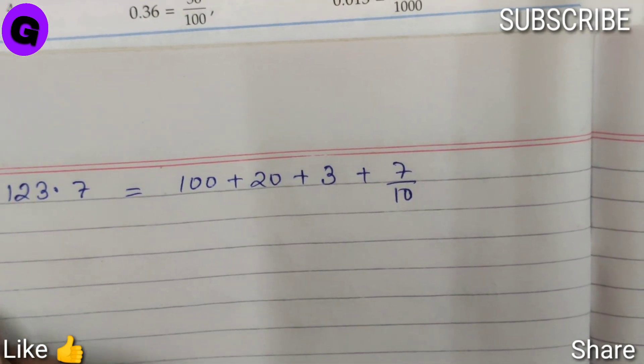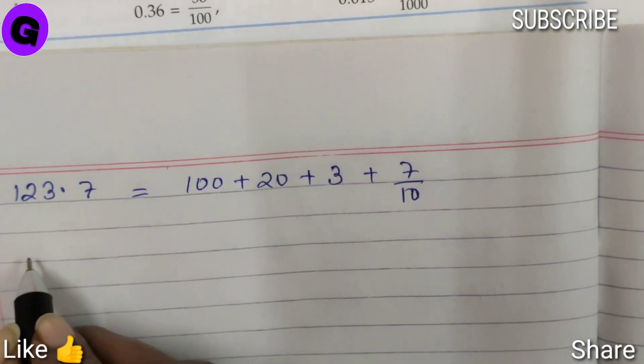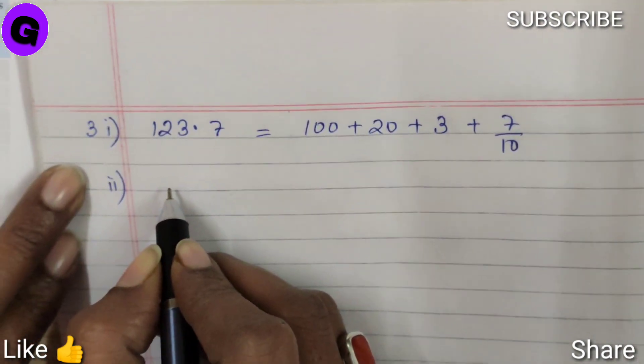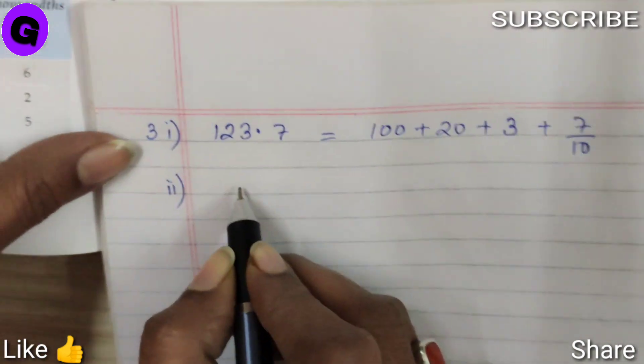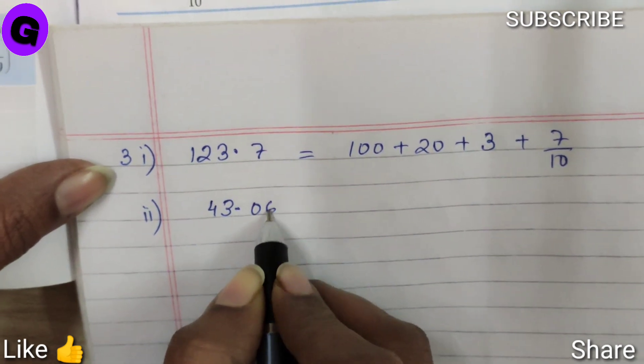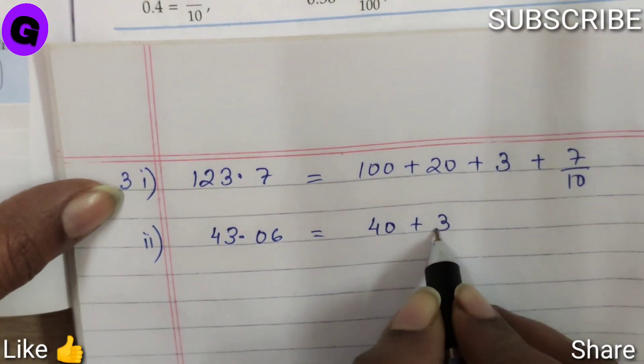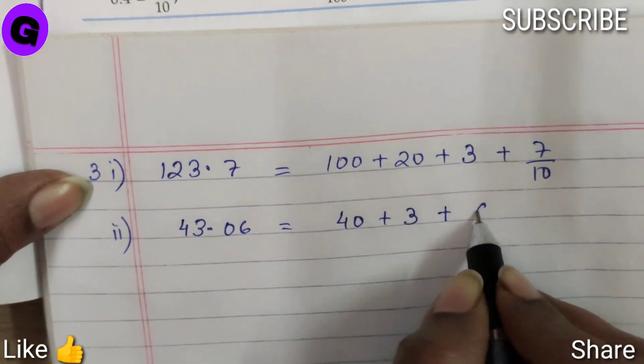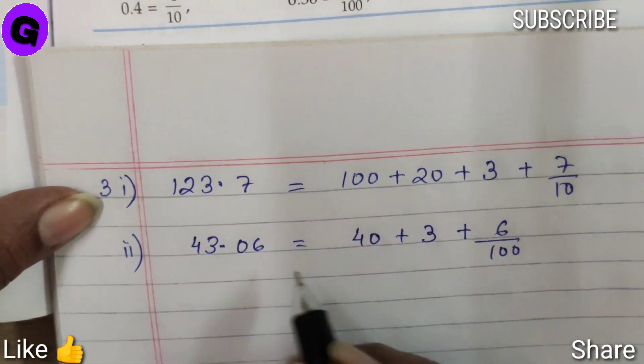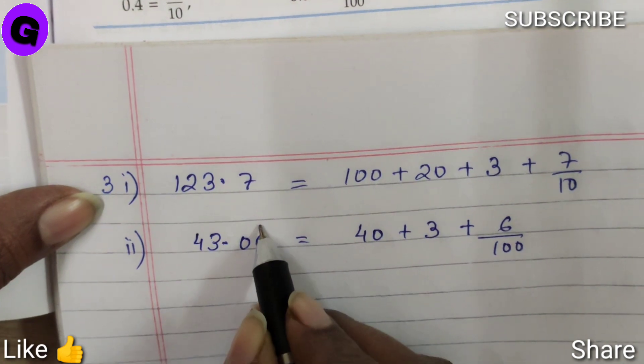Number 2, 43.06, can be written as 40 plus 3 plus 6 by 100, because 6 is at hundredths place.